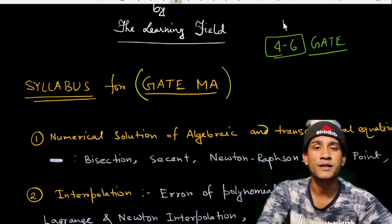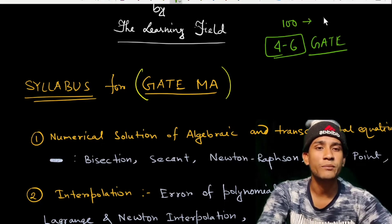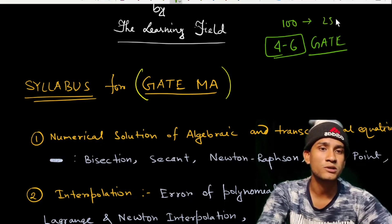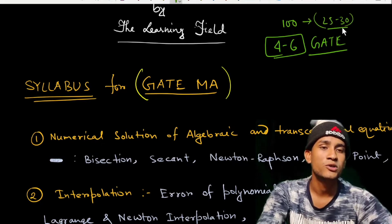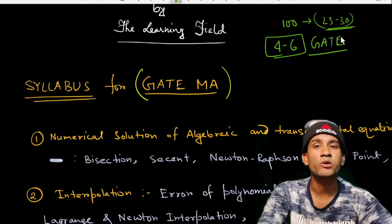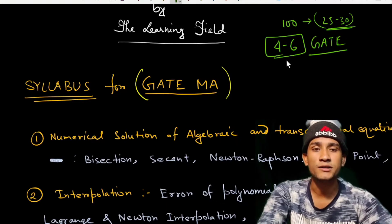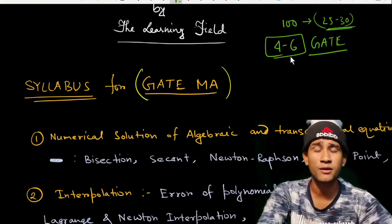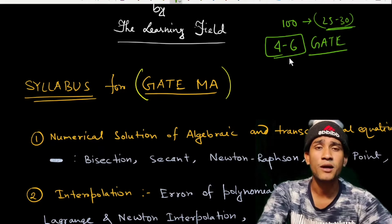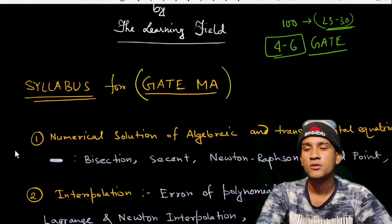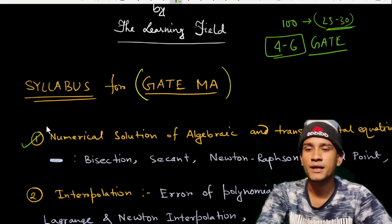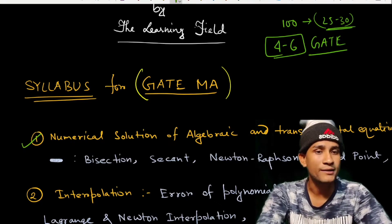The GATE exam is a 100-marks exam and the qualifying or cut-off marks is around 25 to 30. Within that range, four to five marks play a very important role. So the first chapter in our syllabus is numerical solution of algebraic and transcendental equations.